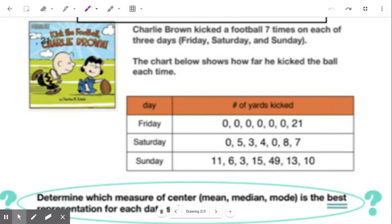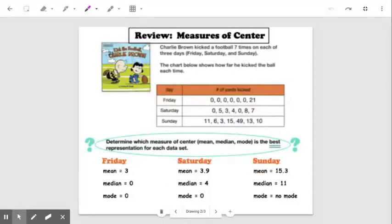So down below here, what I have is a question for you. It says determine which measure of center (mean, median, and mode) is the best representation for each set of data. And so what I already did is I took Friday's data and calculated the mean, median and mode, Saturday's data I calculated the mean, median and mode, and Sunday's data I did the same.